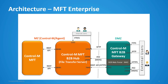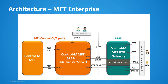Let's look at the MFT Enterprise architecture. Managed File Transfer is deployed to a Control-M agent, and along with this MFT, a file transfer server is also installed. Normally this file transfer server is only accessible to internal users, but with MFT Enterprise, the B2B hub is activated on the file transfer server, which enables external users to access the file transfer server through the B2B gateway component, which is a proxy server installed in the DMZ.